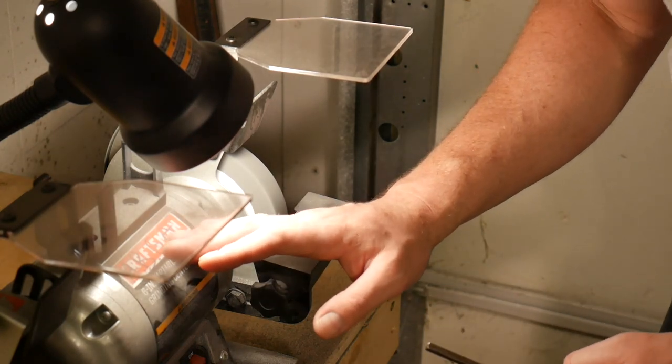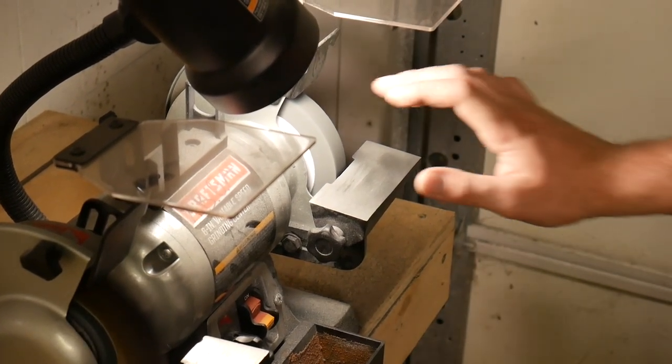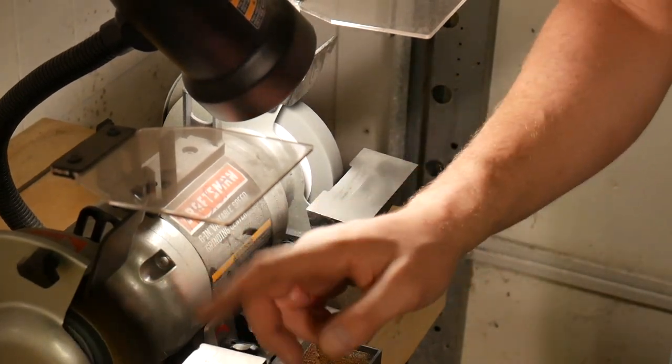The grinder I like to use here is a dual grinder that has two sides to it. We have our stone side here and we have a wire wheel here.